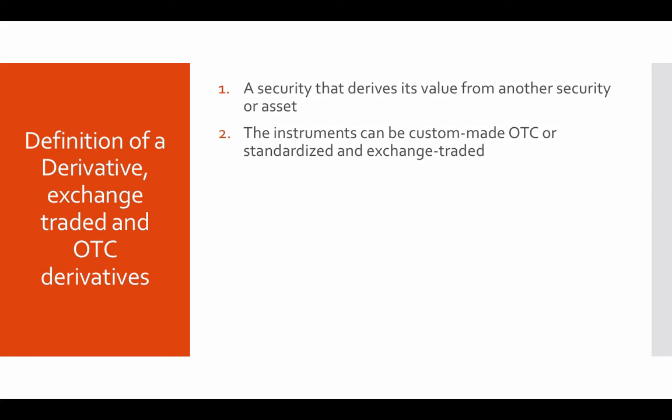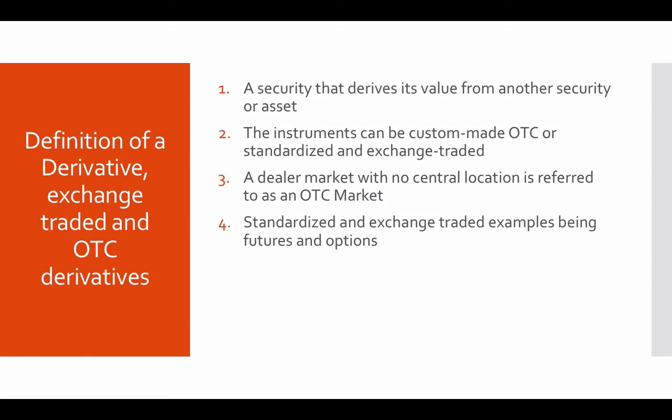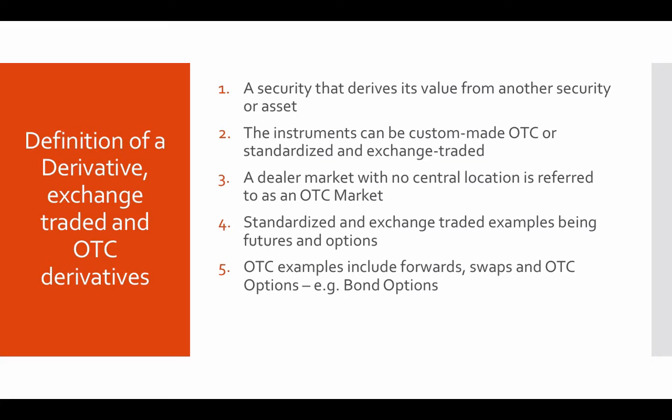Instruments can be custom-made OTC or standardized and exchange-traded. A dealer market with no central location is referred to as an OTC or over-the-counter market. Standardized and exchange-traded examples include futures and options, while OTC examples include forwards and swaps.